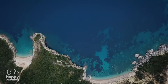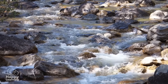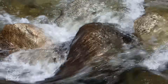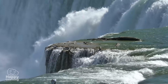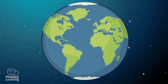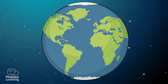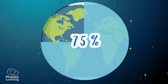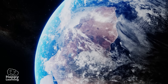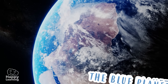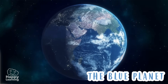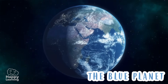The hydrosphere is the total of all the water on our planet, and there's a whole lot of it — approximately three-quarters of the Earth's surface is covered with water. We don't call the Earth the blue planet for no reason. Check it out from the universe. Isn't it beautiful?